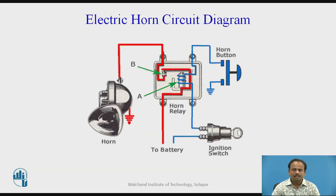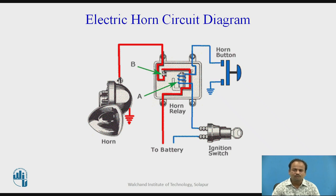This is the electric horn circuit diagram, in which the horn is there, A and B are the circuit breakers. There is a horn relay in between that consists of the circuit breaker. The horn button is there, the current is coming from the battery, and the ignition switch is there. When you start your ignition switch, the current flows from the battery towards the horn relay, and when you push the button, with the help of the circuit breaker, the horn rings. This is how the horn circuit is designed.